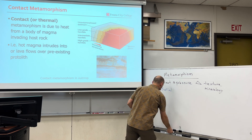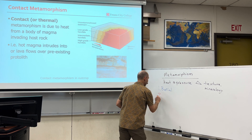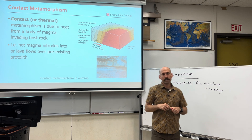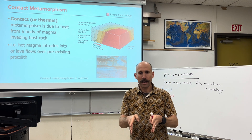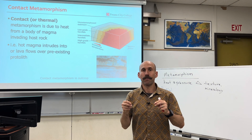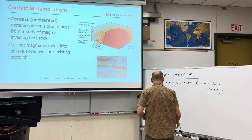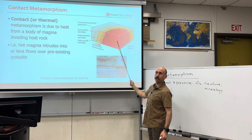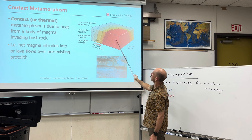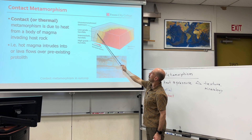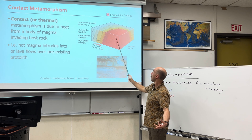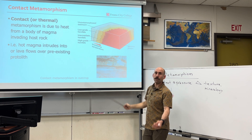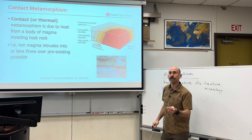Contact or thermal metamorphism. This is when magma makes its way underneath the surface as molten material and heats up the nearby rocks. Here we can see an igneous intrusion — a pluton or a magma chamber. Surrounding the igneous rock, the country rock is heated up by the pluton and ends up changing its form. The result is high-grade hornfels, intermediate hornfels, and low-grade hornfels. Hornfels has high temperature and low pressure.